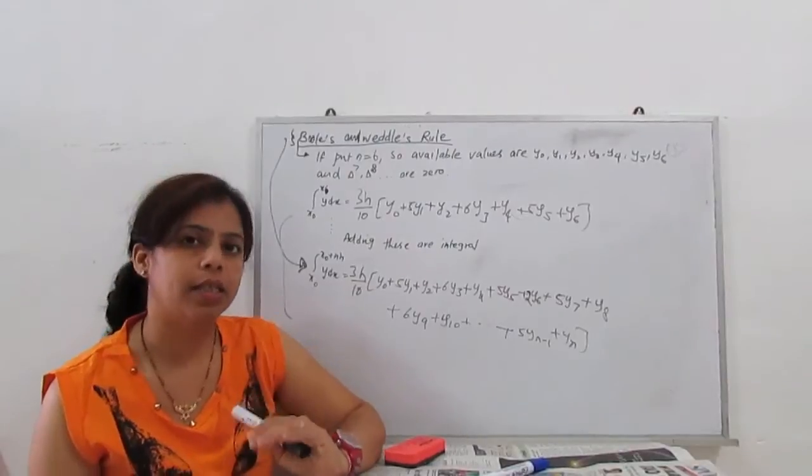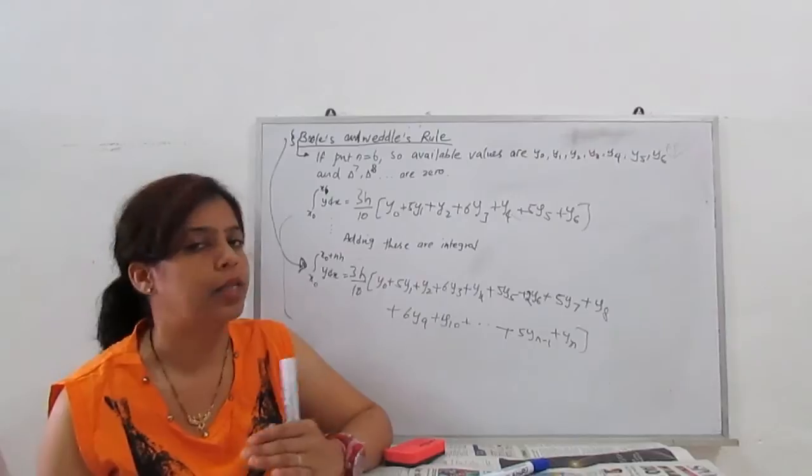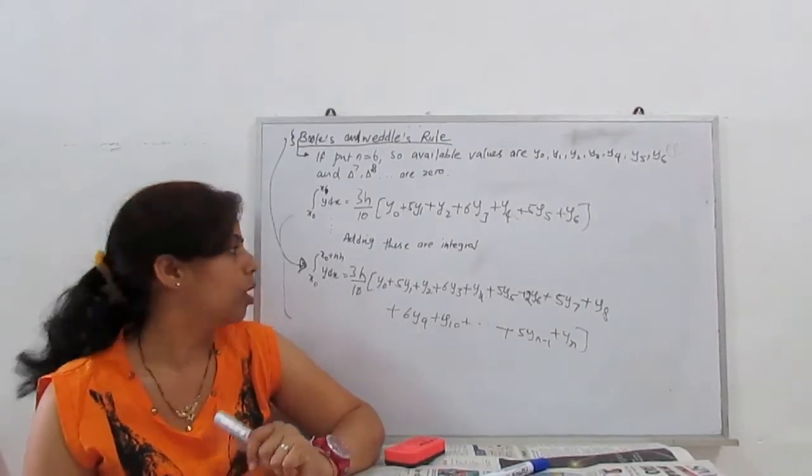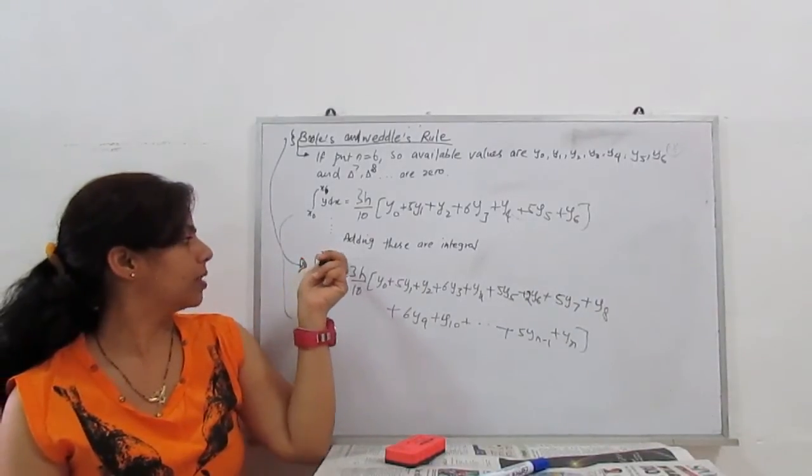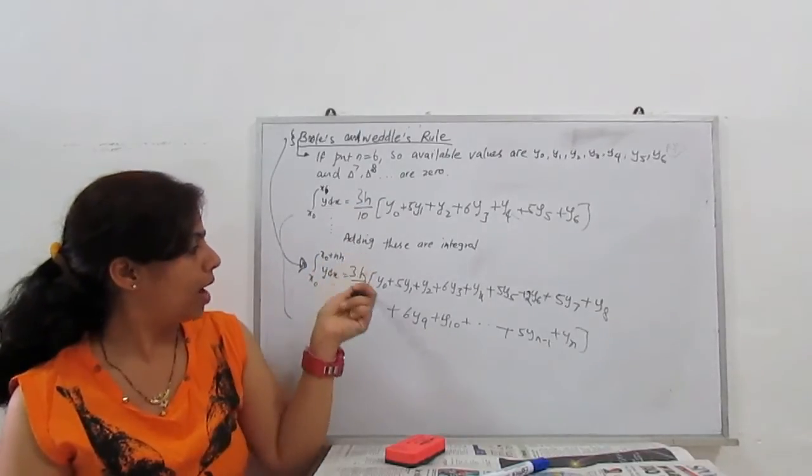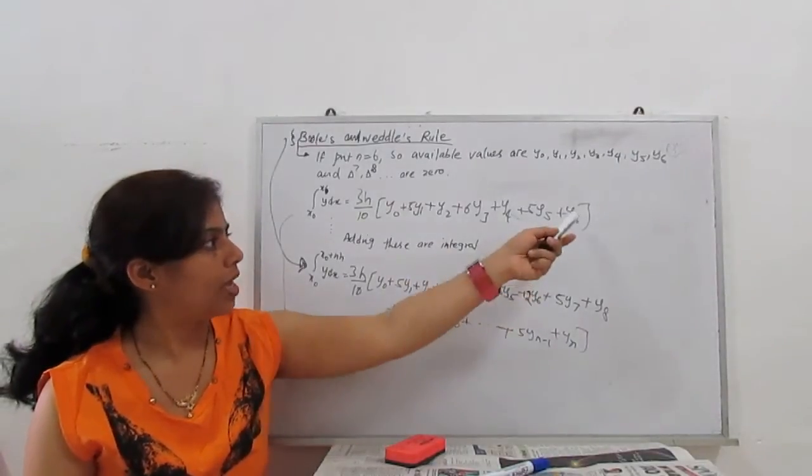Second interval is x6 to x12. Third is x12 to x18, and so on. So when we add all these terms, our general formula is given by x0 to x0 plus nx, y dx is 3h by 10, y0 plus 5y1 plus y2 plus 6y3 plus y4 plus 5y5 and y6.